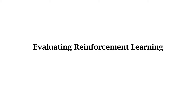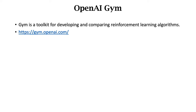We have learned all the terminologies. Suppose there are two reinforcement learning algorithms — how do we evaluate them to see which one is better? OpenAI Gym is a toolkit for developing and comparing reinforcement learning algorithms. It is the benchmark for evaluating reinforcement learning, similar to what ImageNet data is for computer vision.